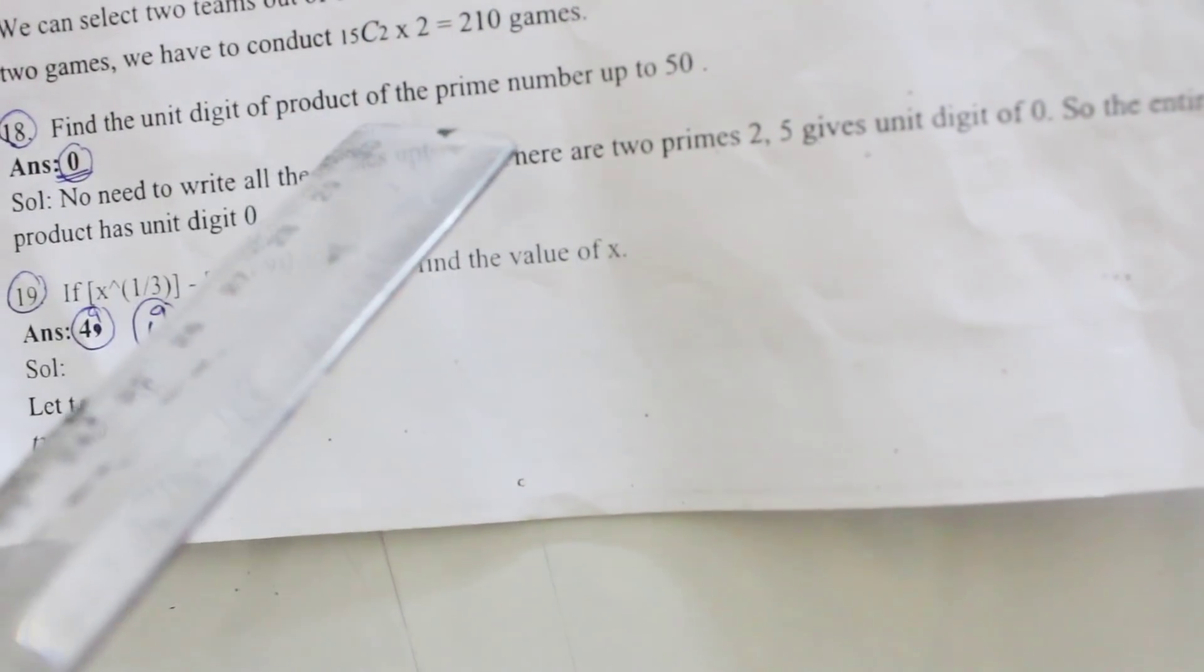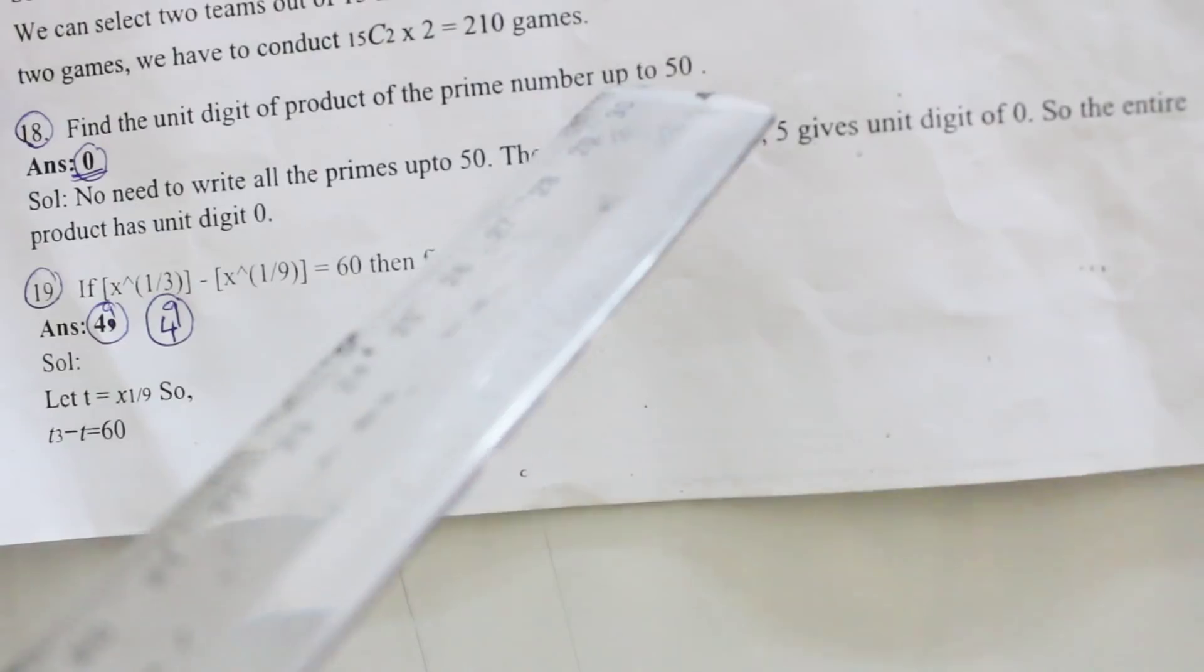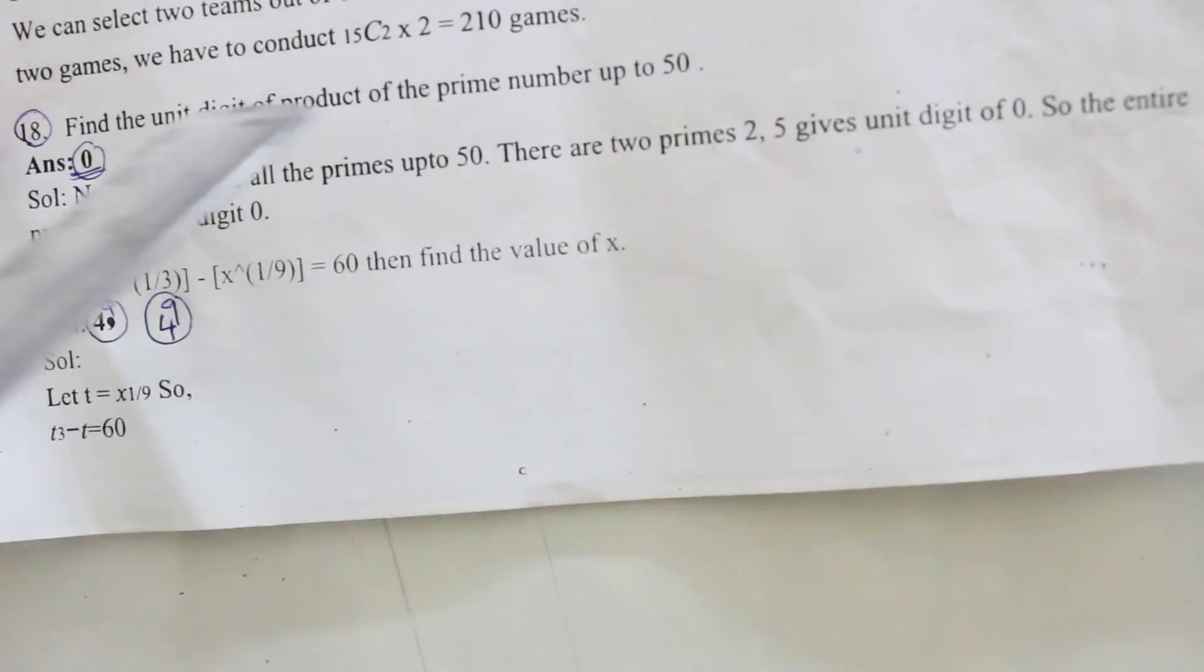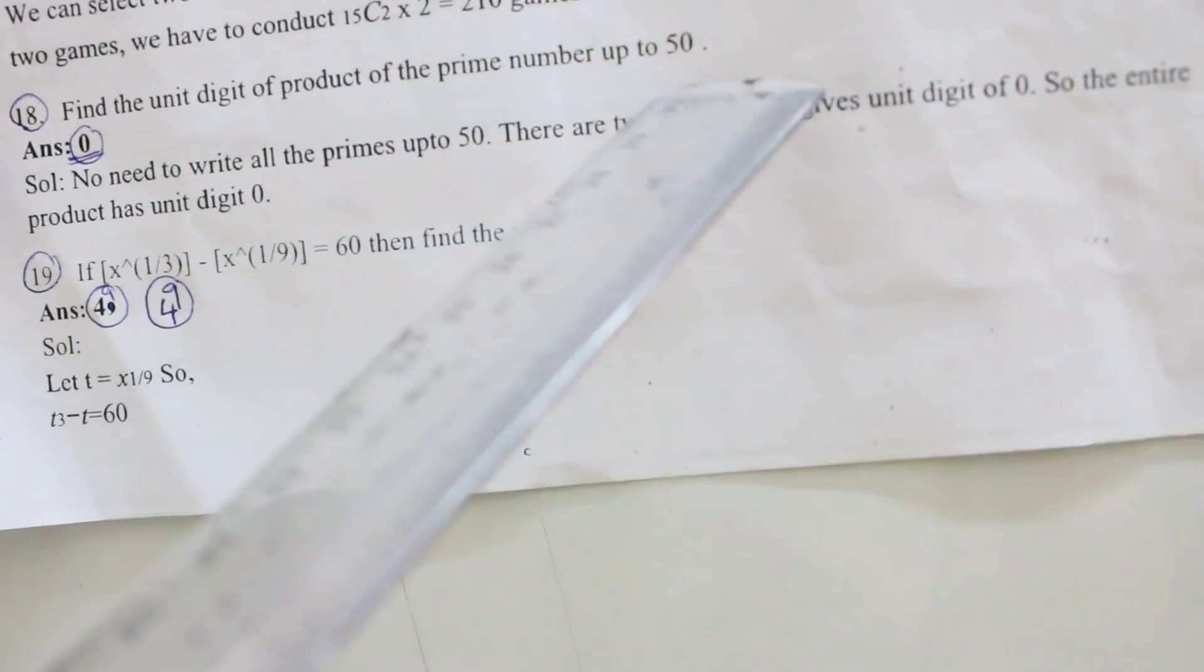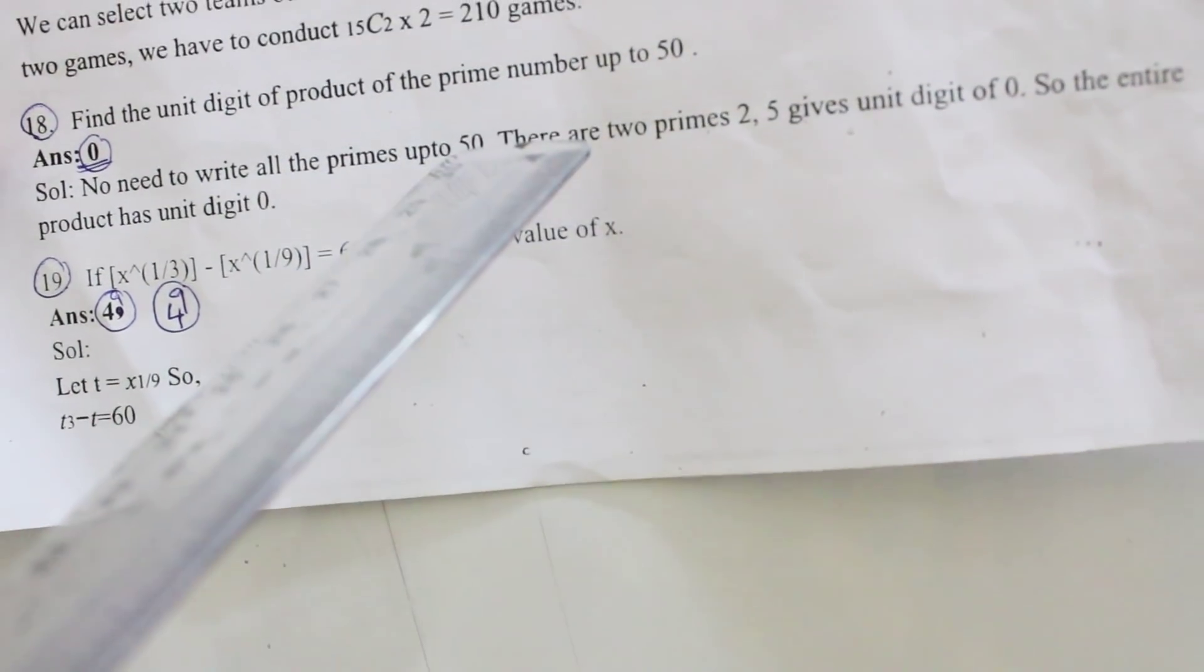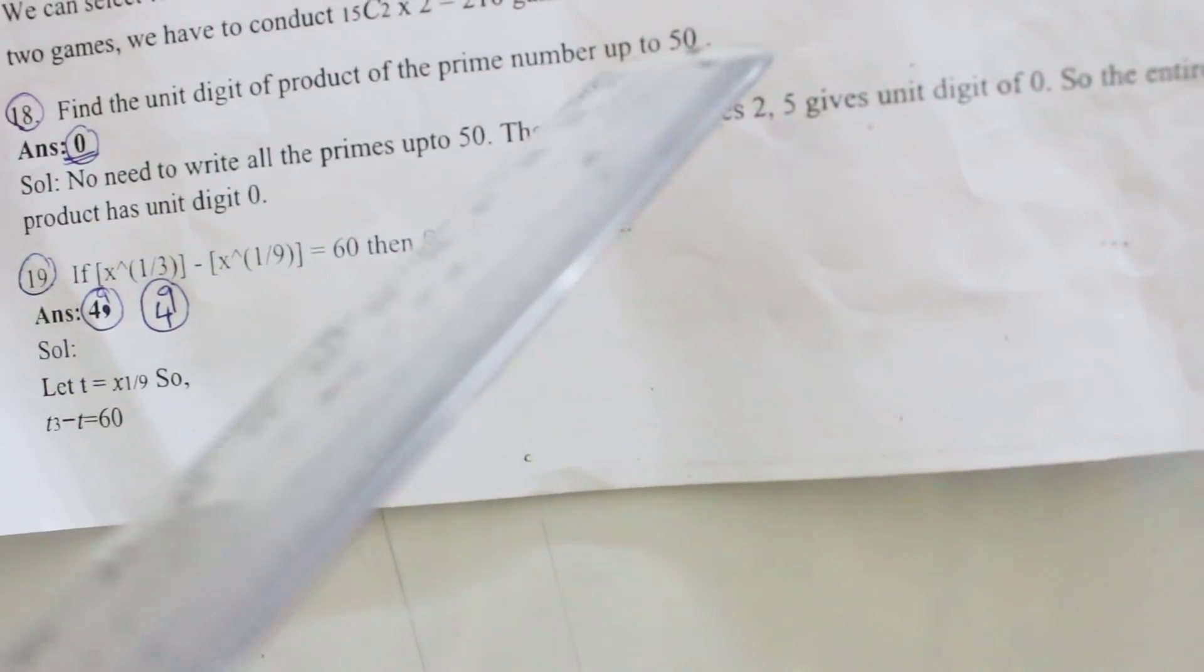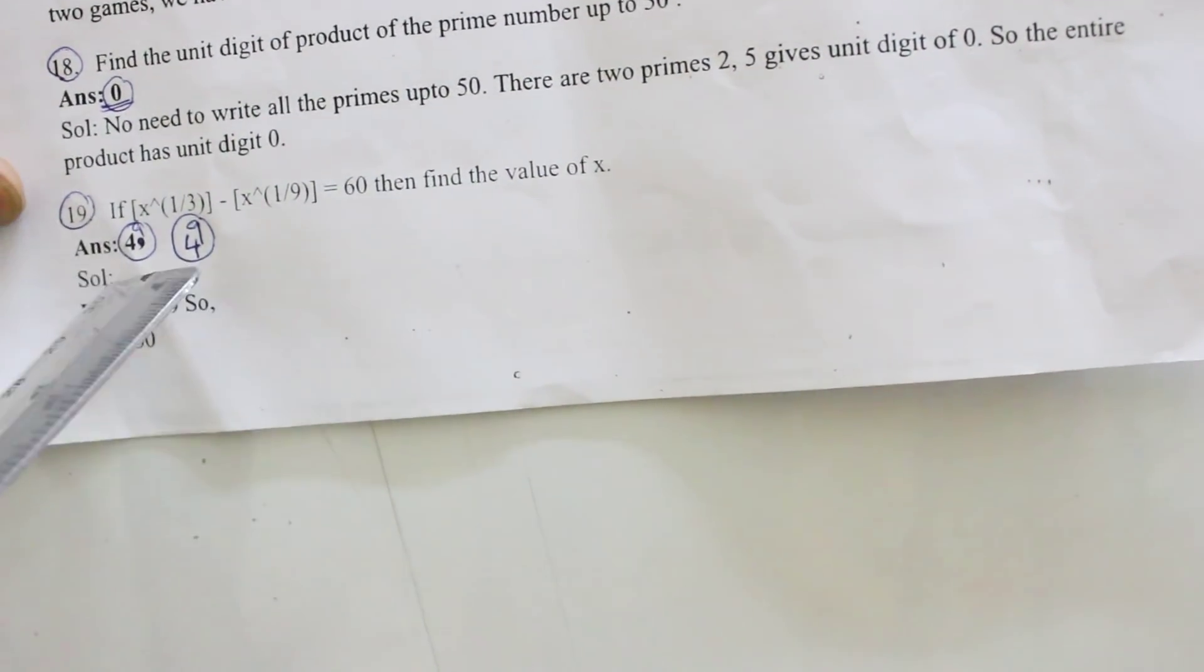18th one: Find the unit digit of the product of the prime numbers up to 50. If the answer is 0, this type of problem previously explained. The prime number is that 25 is also prime number, 2 into 5 is 10, 10 into anything you get the unit digit always 0.